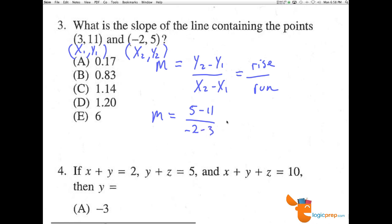Now that means that 5 minus 11 is negative 6, negative 2 minus 3 is negative 5, and a negative over a negative is a positive 6 fifths, or 1.2 is the slope, making D the correct answer.